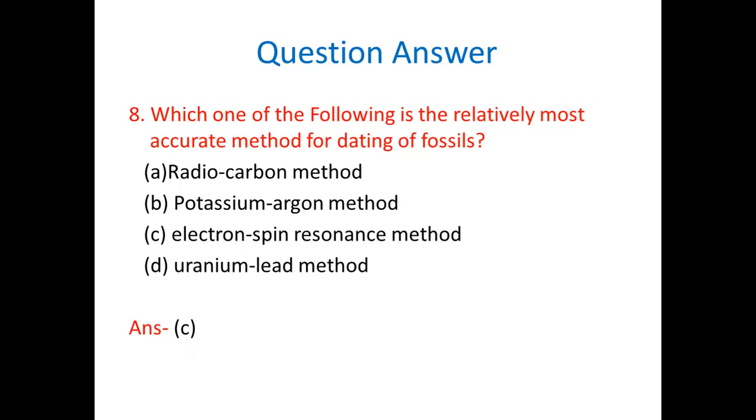Which one of the following is relatively most accurate method for dating of fossils? Radiocarbon method, potassium-argon method, electron spin resonance method, uranium-lead method. So here radiocarbon method was one of the oldest things. But right now it has been changed and in case of radiocarbon it is taking half-life period. So right now it is asking the question based on the most accurate method. So electron spin resonance method is the most accurate method for dating or to know the date of the fossil.